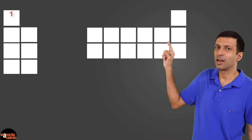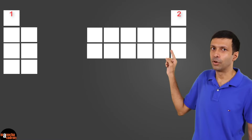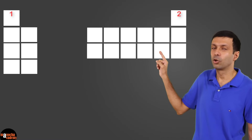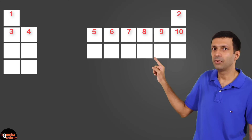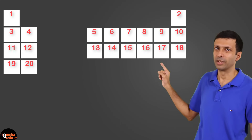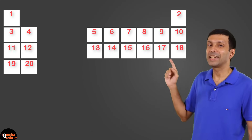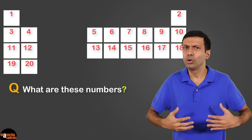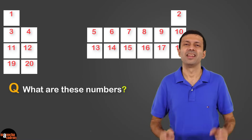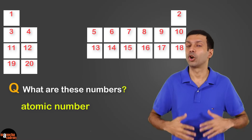Next, start numbering the boxes. Start from 1, 2, finish the first row, then go on to the second row: 3, 4, 5 and so on. These numbers look like serial numbers or roll numbers. But do you know what they really are? That's right, they are atomic numbers.